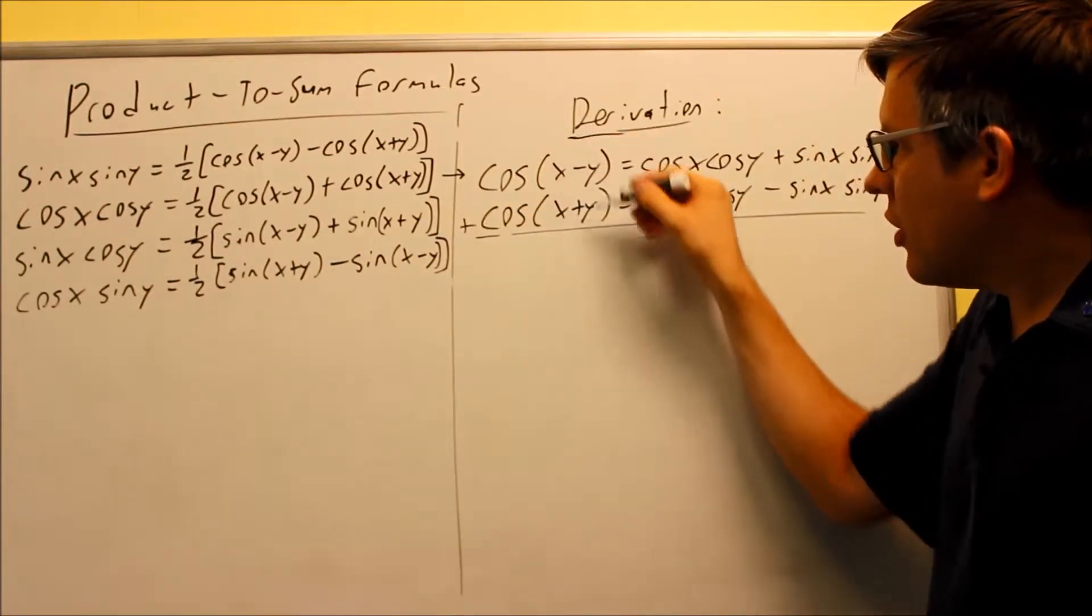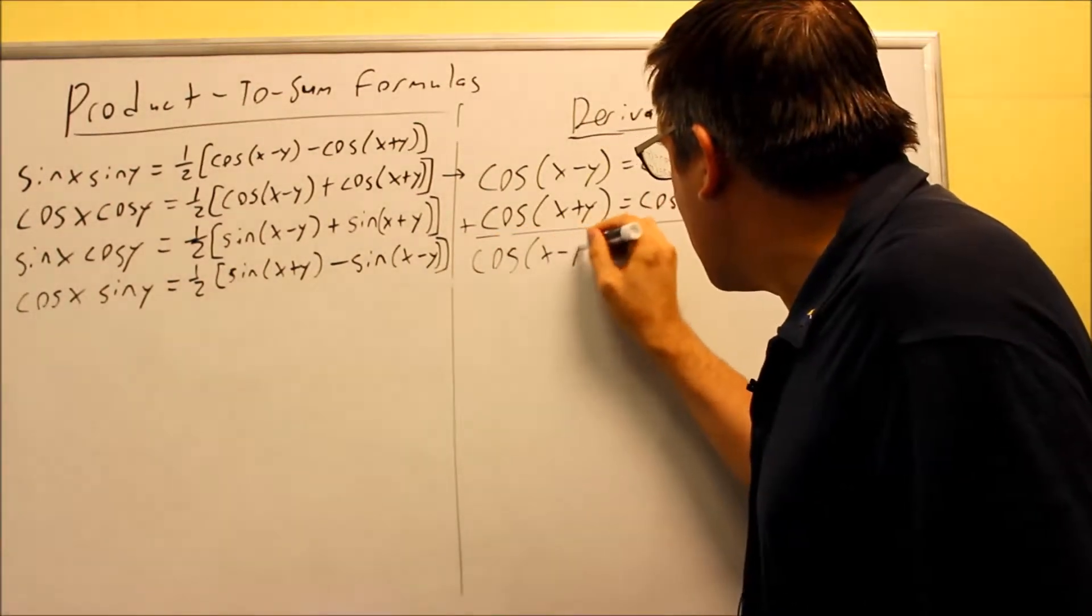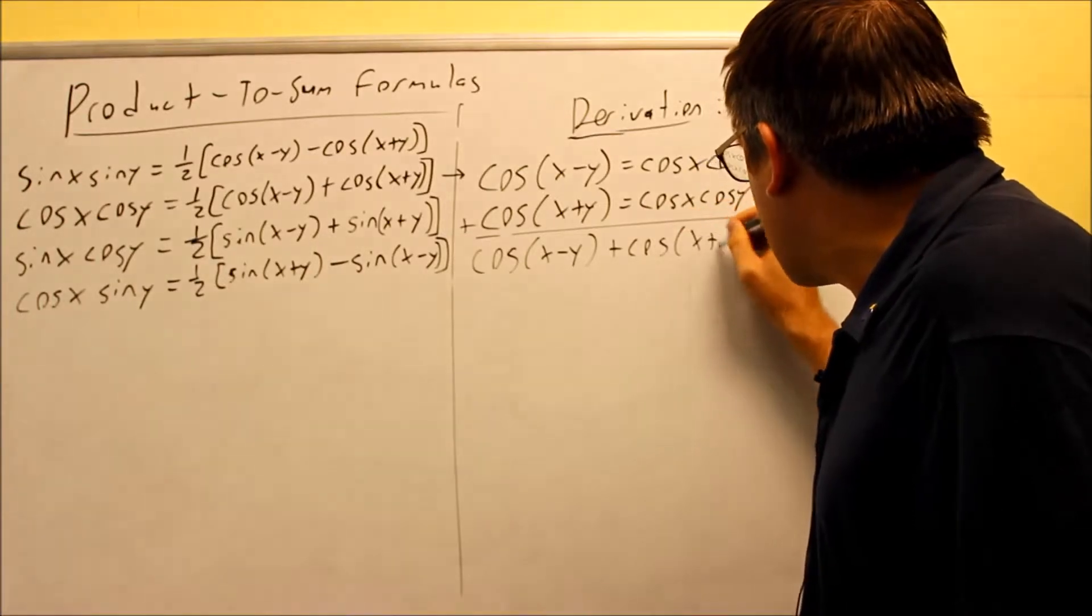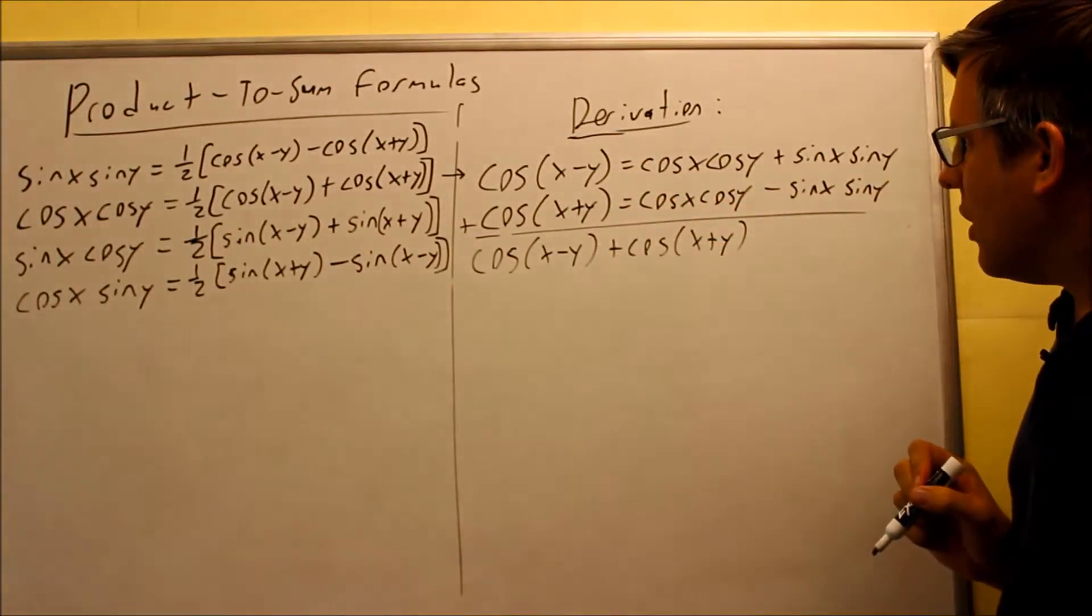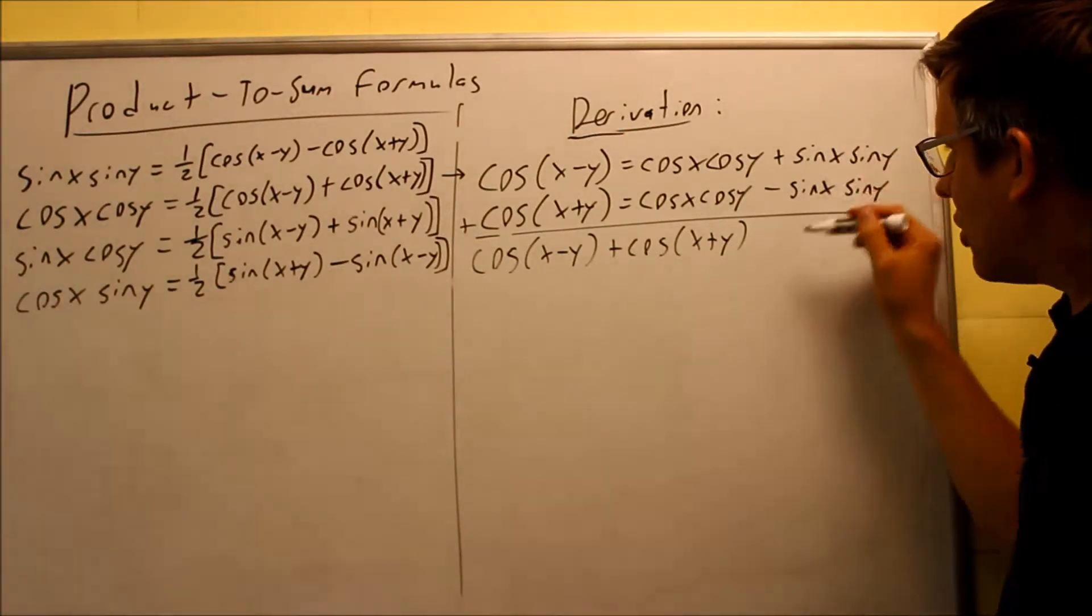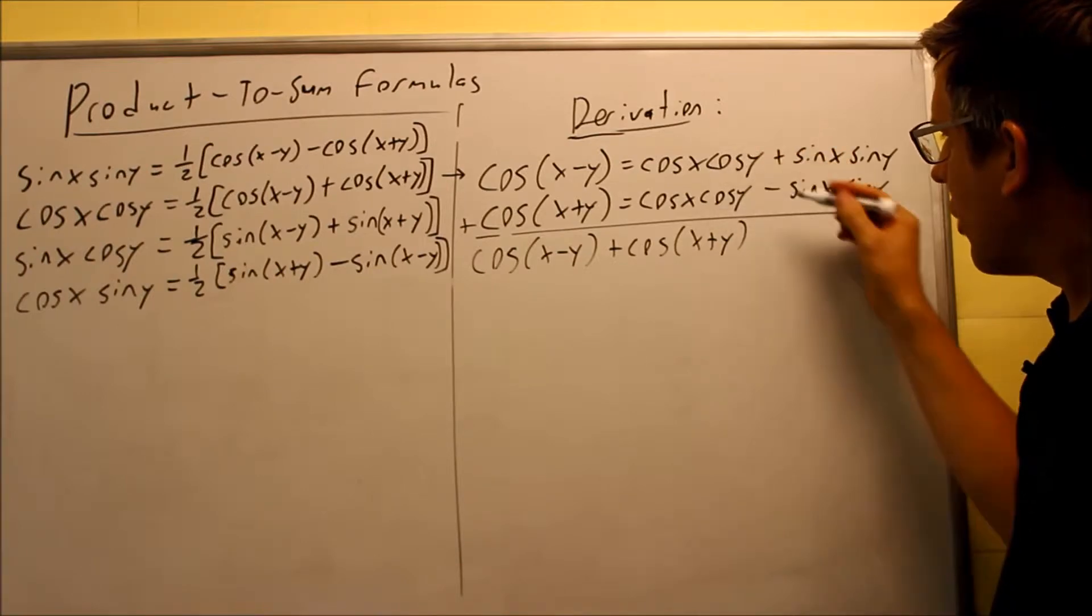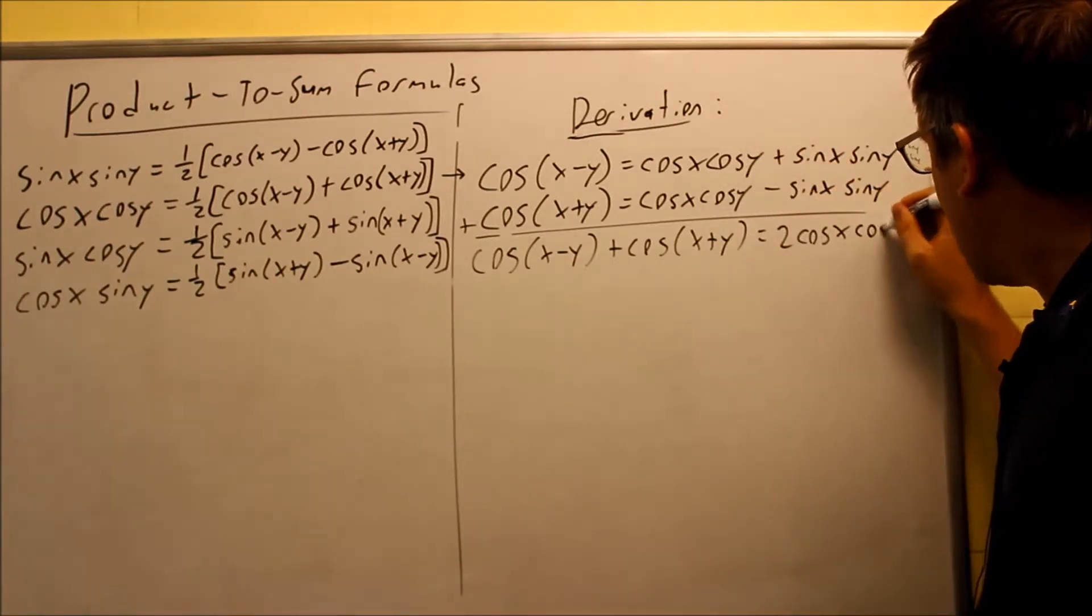Now if I add them together, these are not like terms, so I have to just write them out: cosine(x-y) plus cosine(x+y). On this side, these two terms are going to drop when I add them together, and I can add these together as like terms. So I have 2cosine(x)cosine(y).